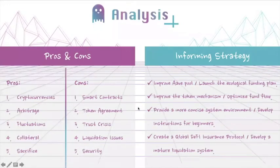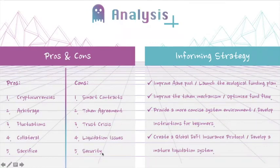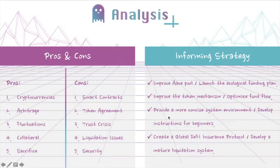Next is the analysis of the whole project. First is the pros and cons part. After a full debate, we reached this conclusion. We identified five problems: smart contracts, the token agreement, the trust crisis, liquidation issues, and security problems. To solve these five disadvantages, we made informing strategies. We will improve a pool to solve the token agreement issues, and provide a more concise system environment and develop instructions for beginners for the smart contract issues.